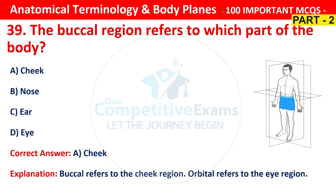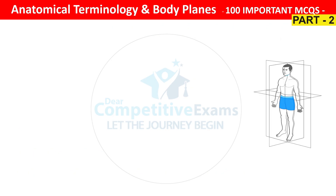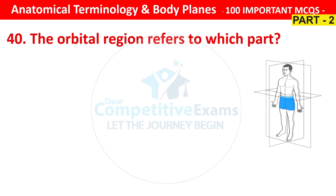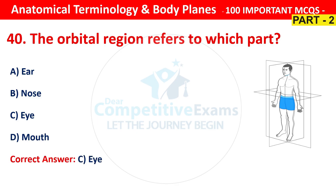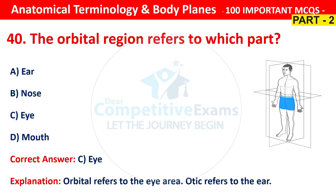Question number 40. The orbital region refers to which part? Your options are ear, nose, eye or mouth. The correct answer is C, that is eye. Orbital refers to the eye area, and auric refers to the ear.